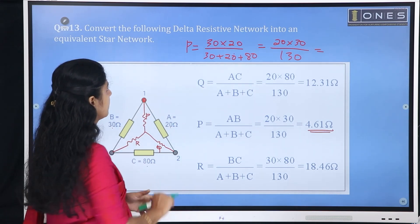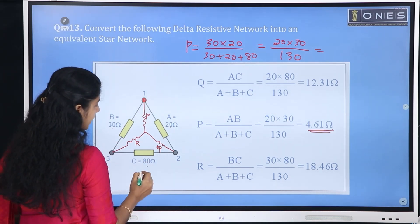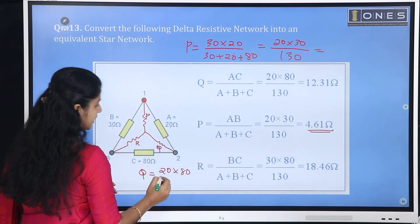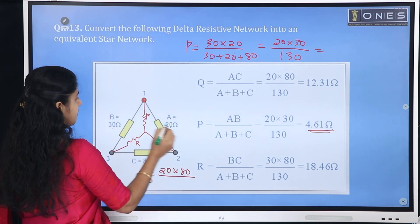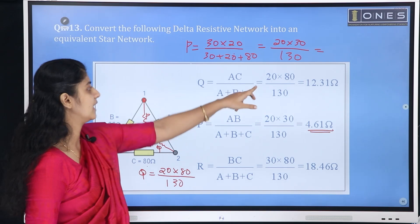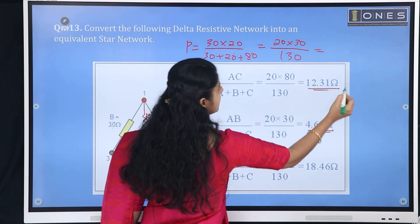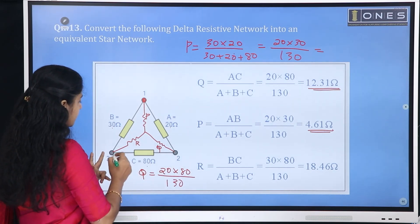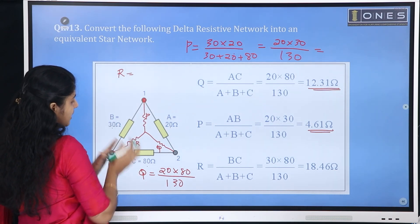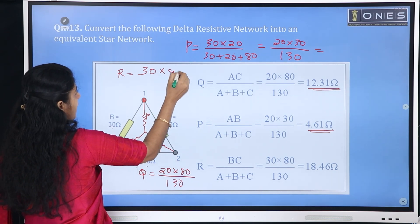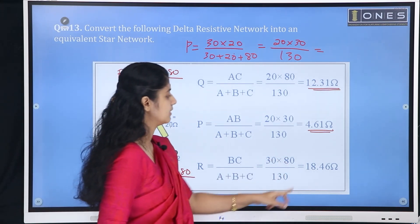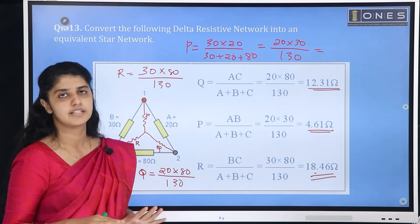Similarly, Q equals 20 into 80 divided by 130. And R: R equals the product of the left and right resistors, which is 30 into 80 divided by the sum 130. The final answer for R is approximately 18.46 ohms. This is the delta-to-star transformation.